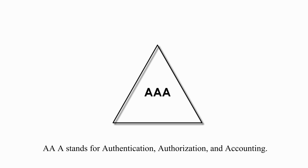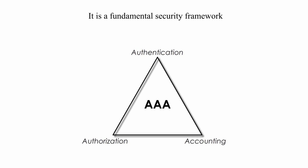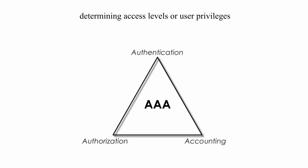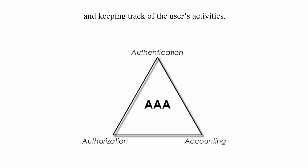AAA stands for Authentication, Authorization, and Accounting. It is a fundamental security framework for controlling a user's access to a network, determining access levels or user's privileges based on policies and user identity, and keeping track of the user's activities.